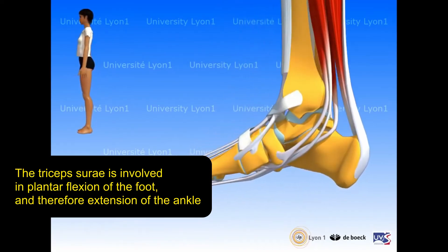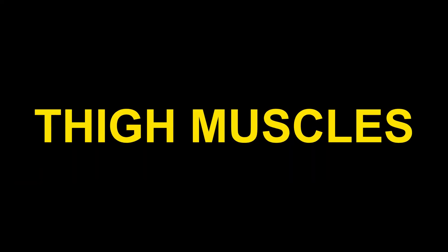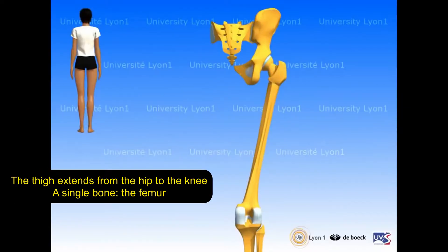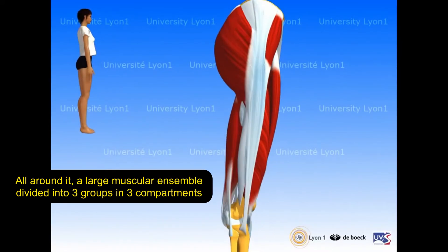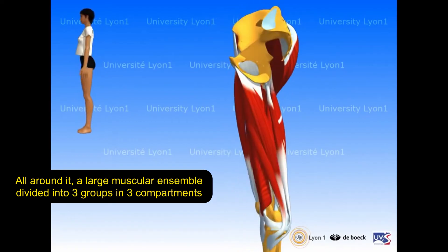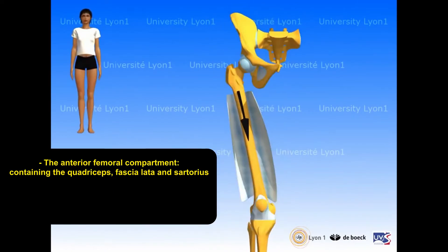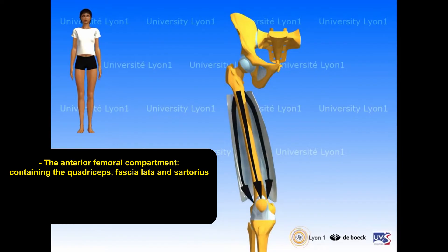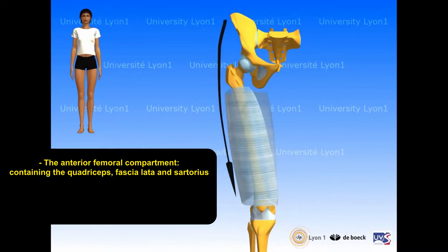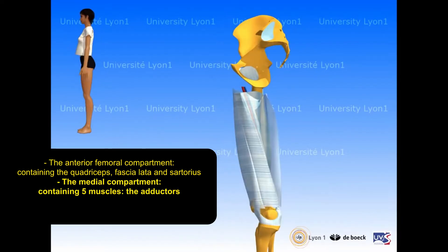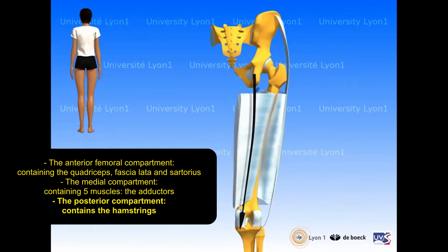Thigh muscles. The thigh extends from the hip to the knee, with a single bone, the femur. All around it is a large muscular ensemble divided into three compartments: the anterior femoral compartment containing the quadriceps, fascia lata, and sartorius; the medial compartment containing five muscles, the adductors; and the posterior compartment, which contains the hamstrings.